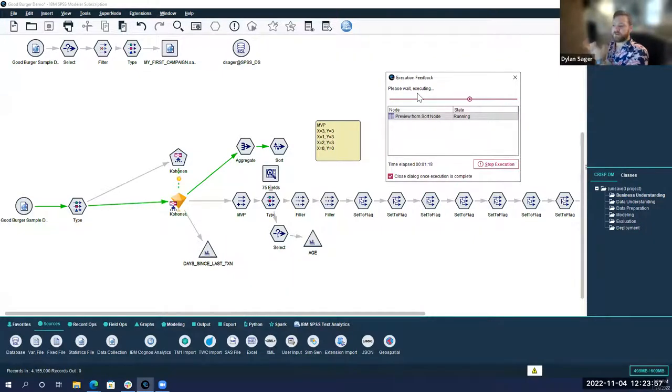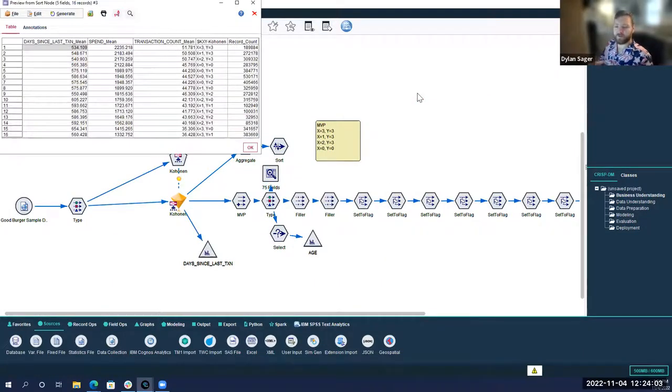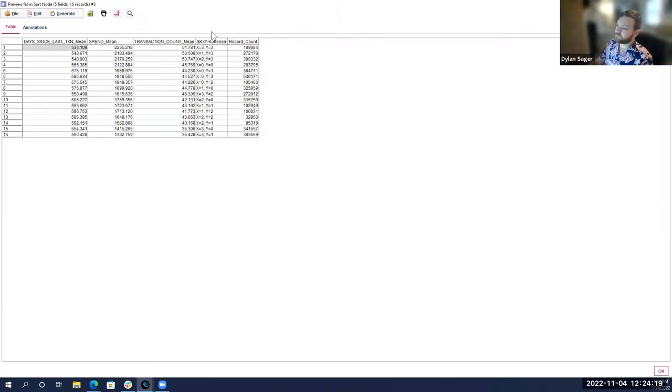When we did these clusters, we only use the customer attributes. We did not use the RFM. We don't want to bias the clusters prematurely with RFM. If you're including these RFM measures in the clusters, inherently you're going to bias the clusters to look for that. We just want to identify significant groupings of customer types. Then we want to overlay these important business metrics to see if any customer types are really over or under spending.